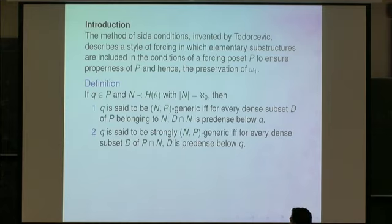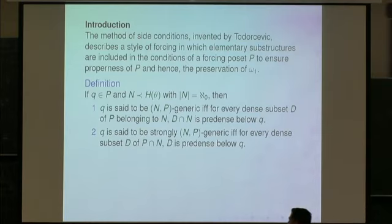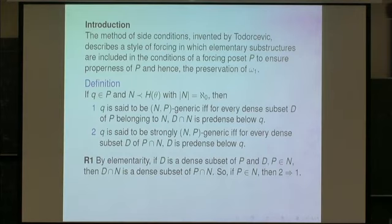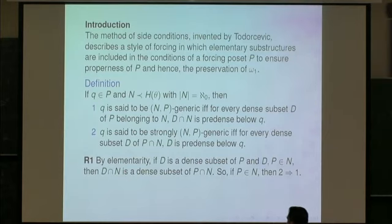Something stronger is the following: Q is said to be strongly NP-generic if and only if for every dense subset D of P intersection N, D is predense below Q. And of course, 2 implies 1, because by elementarity, if D is a dense subset of P and both D and P are elements of N or definable in N, then D intersection N is a dense subset of P intersection N.